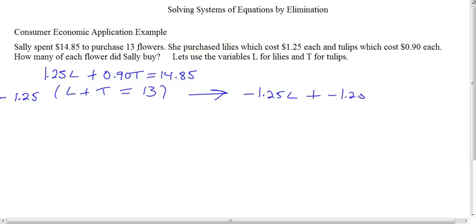So 1.25 times L is negative 1.25L plus negative 1.25T equals... we have 13 times 1.25, that's going to give us 16.25. And because this is a negative, so that's going to make that a negative. Let me check that I did the math right.